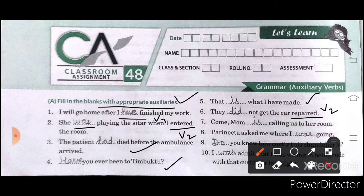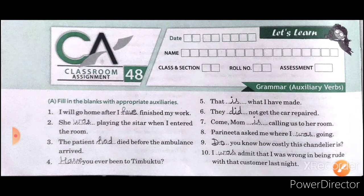Seventh one: Come, mom is calling us to her room. Eighth one: Parinita asked me where I was going. Ninth one: Do you know how costly this chandelier is? Tenth one: I was admitted that I was wrong in being rude with the customer last night.